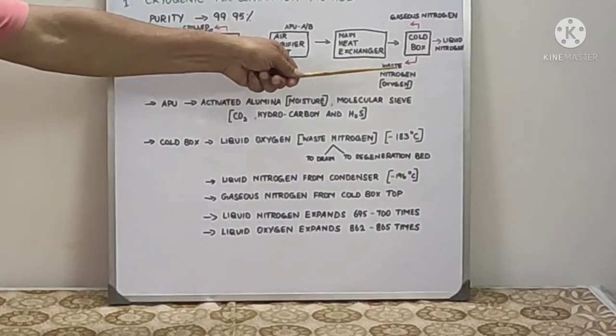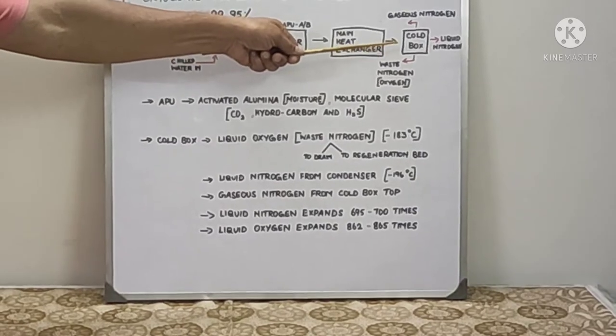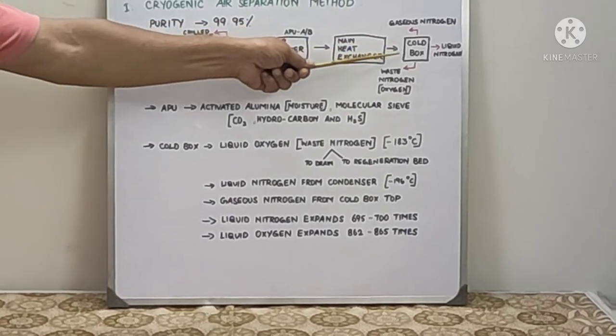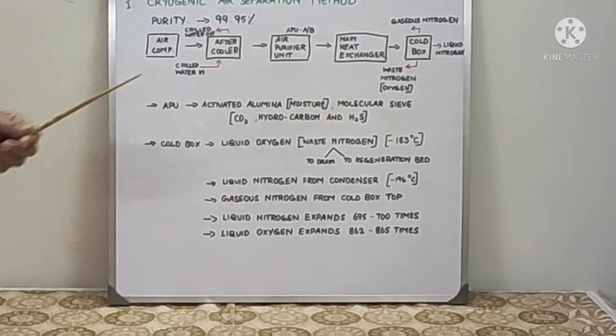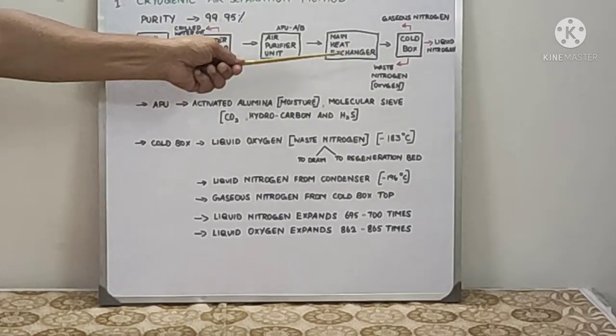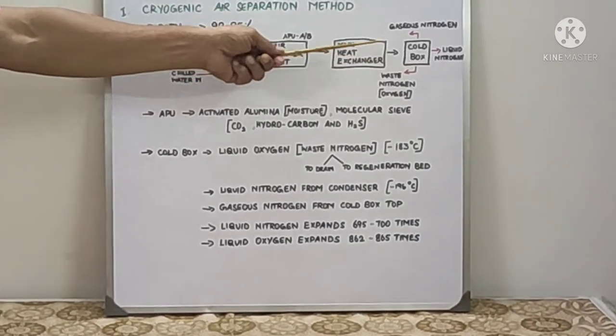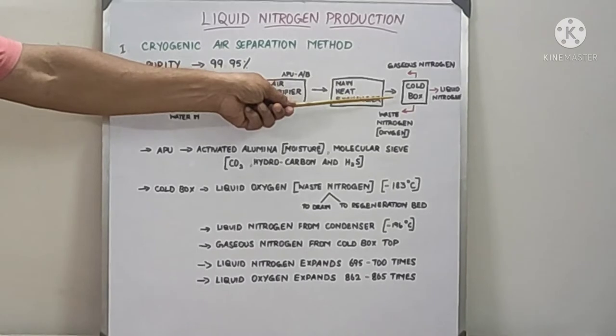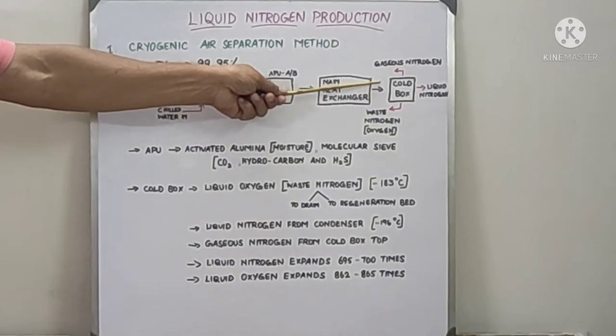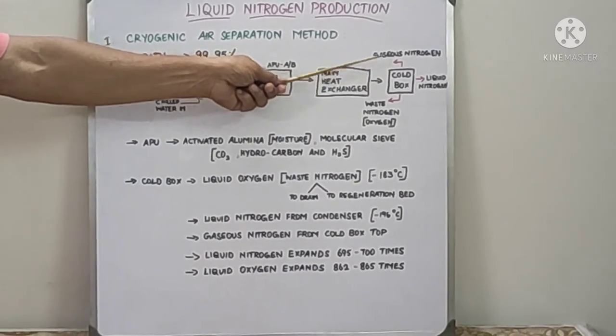In the cold box, we have two condensers and high pressure tower. After heat exchanger, if you want only liquid nitrogen, you will have expansion turbine. If you want gaseous nitrogen more, then you will have cold expander turbine and cold booster also.